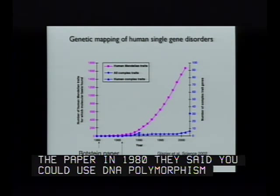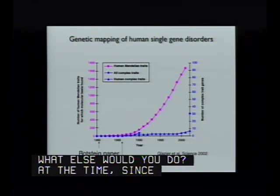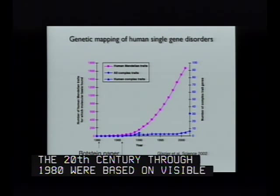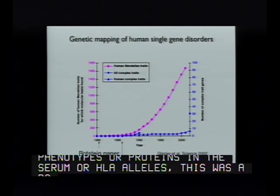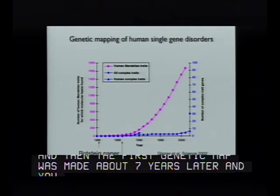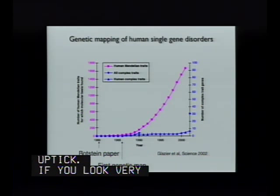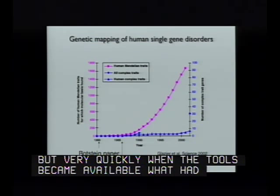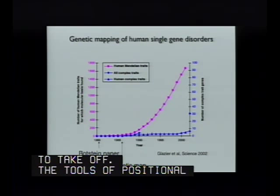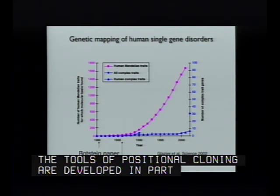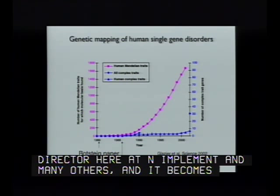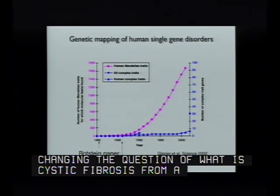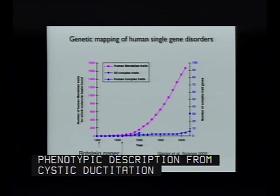The first genetic map was made about seven years later, and you see almost immediately an uptick. The genetic mapping to Huntington's by Jim Gusella in 1983 was a landmark. When the tools became available, what had been an extremely difficult task began to take off. The tools of positional cloning were developed, in part by our director here at NIH, and it became possible to identify literally thousands of genes for human diseases, changing the question of what is cystic fibrosis from a phenotypic description to a mechanistic understanding.